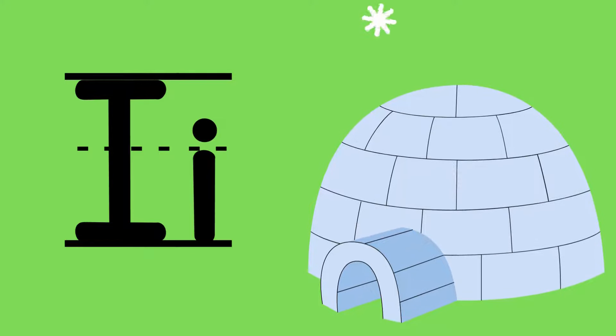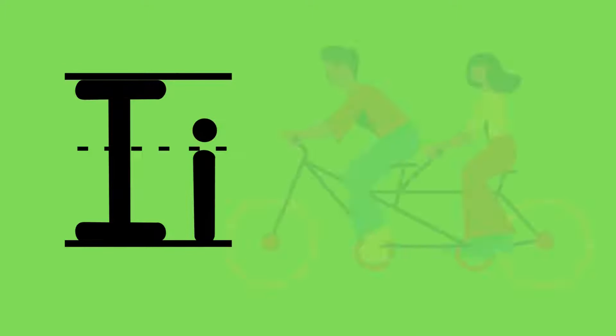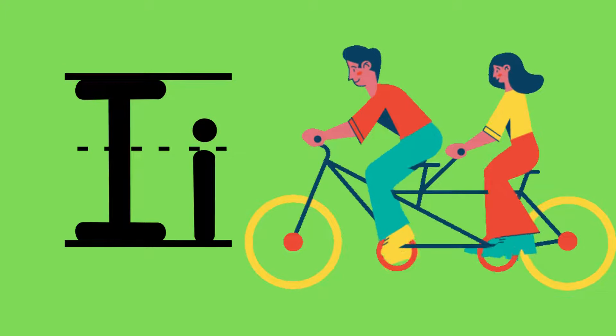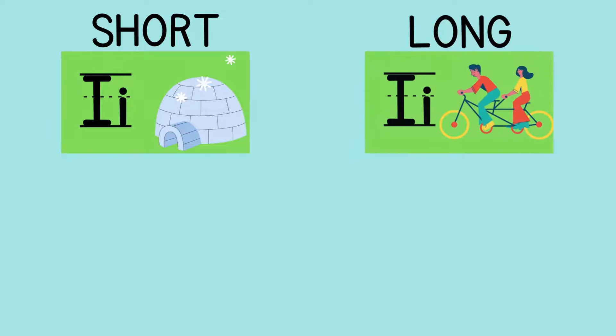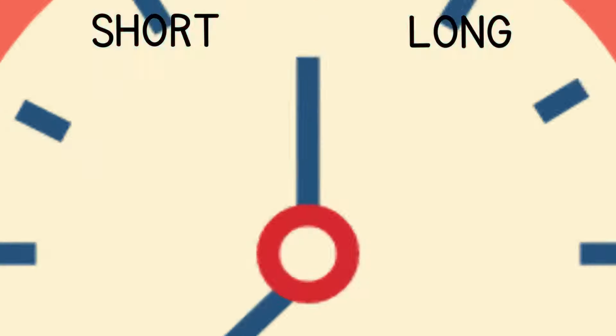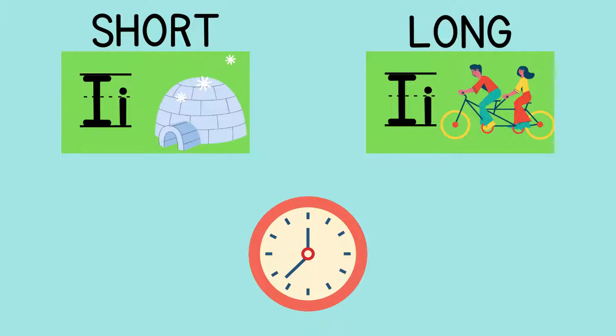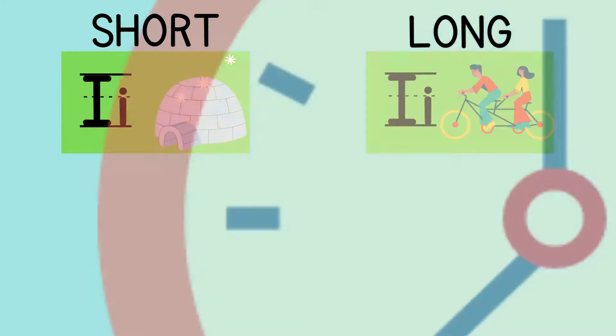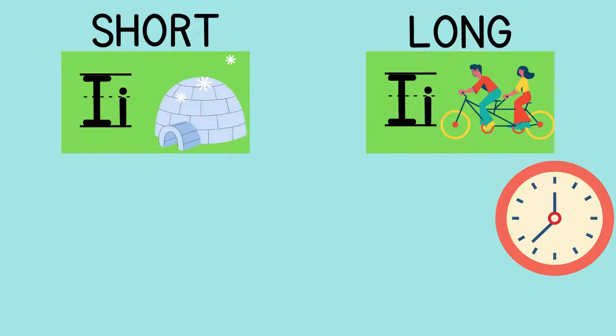I says 'i' as in igloo when it's short, and 'ī' as in bike for its long sound. Let's sort. Here we go. Time - do you hear the short or the long I? Time. I hear 'ī', long I.